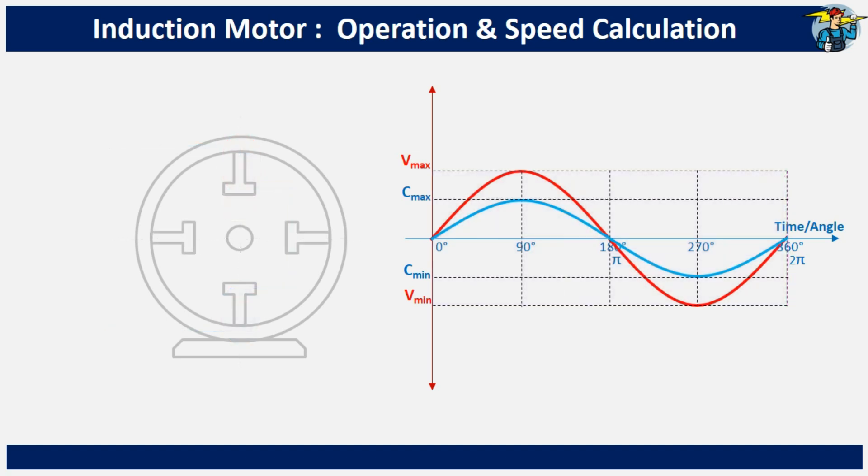Now consider a motor with four poles, with winding arrangements on all poles like this. There are various winding arrangements, but I've chosen this arrangement to show how the speed of the rotating magnetic field changes with the addition of pole pairs.